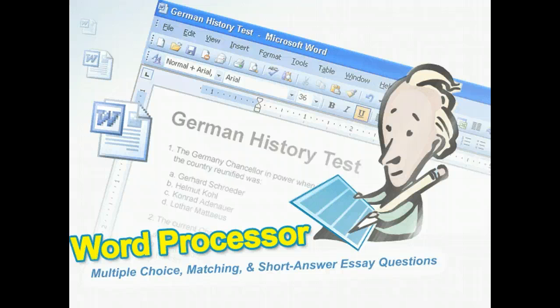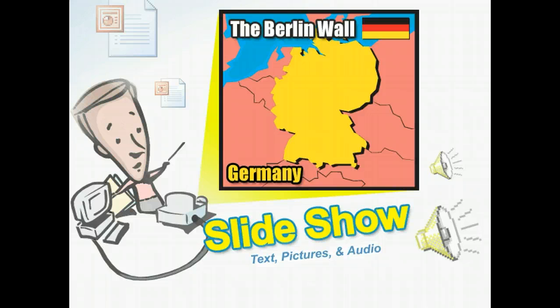You'll find many uses for applications such as those from the Microsoft Office system. For example, you could use a word processor application, such as Microsoft Office Word, to create a test on German history — simply type your questions with multiple choice, matching, and short answer essay questions. You could also use a presentation program, such as Microsoft Office PowerPoint, to create a slideshow accompanying a lecture about the destruction of the Berlin Wall, with slides containing text, pictures of the wall before and during destruction, and audio recordings of eyewitness accounts.